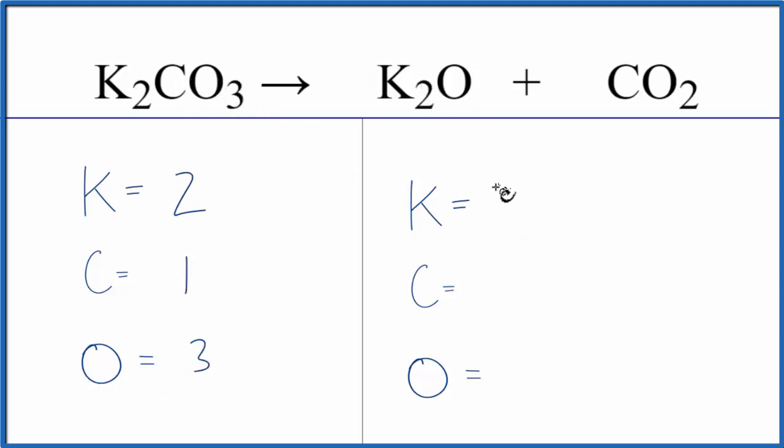On the product side, we have two potassiums. For carbon, we have just one, and for oxygen, we have one of those plus these two here. Make sure you count those. One plus two is three.